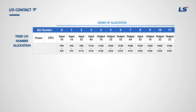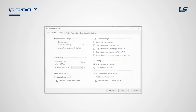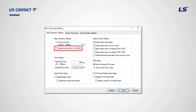The allocation of input-output numbers gives an address to the input-output terminal of each module in order to read data from the input module and print data to the output module during operation. XGK provides two kinds of input-output allocation: fixed and variable. By selecting 'Assign fixed points to input-output slot' from basic parameters, 64 points are allocated to each slot regardless of module. Users do not need to change programs even if they change the module later.